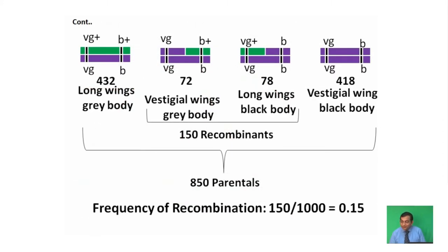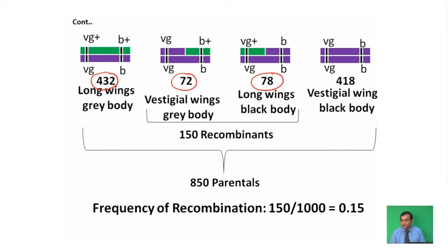Now, the frequency or number of these individual flies — as per our data, the long wings, grey body parental type we obtained is 432. The two recombinant types are: vestigial wings, grey body at 72, and long wings, black body at 78. The other parental type, vestigial wings, black body, we obtained 418. This data shows that parental types are higher in number than recombinant types.